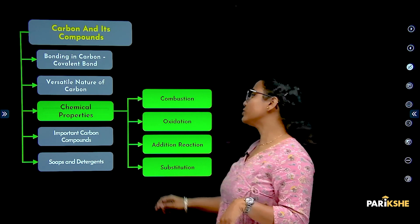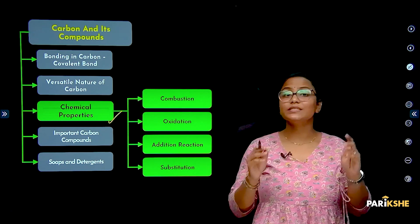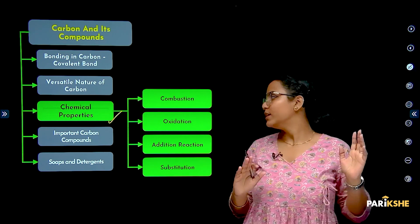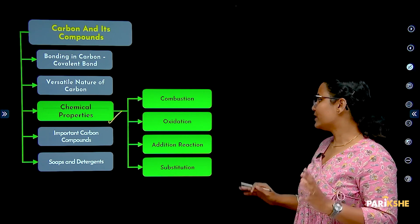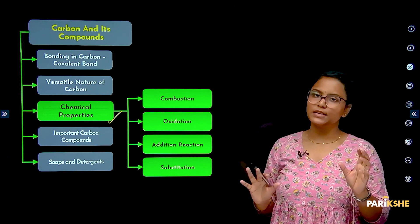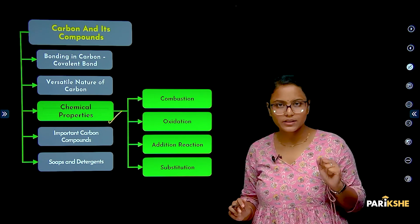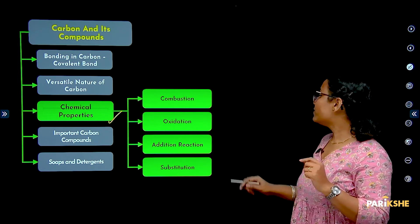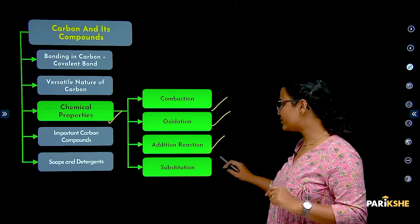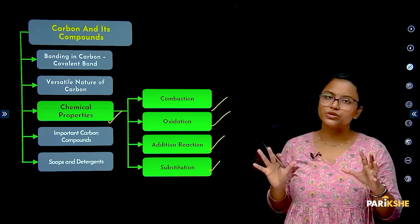This is the third topic of carbon and its compounds, which is chemical properties of carbon compounds. There are four major properties and types of reactions: first is combustion, second is oxidation, third is addition, and last is substitution reactions.